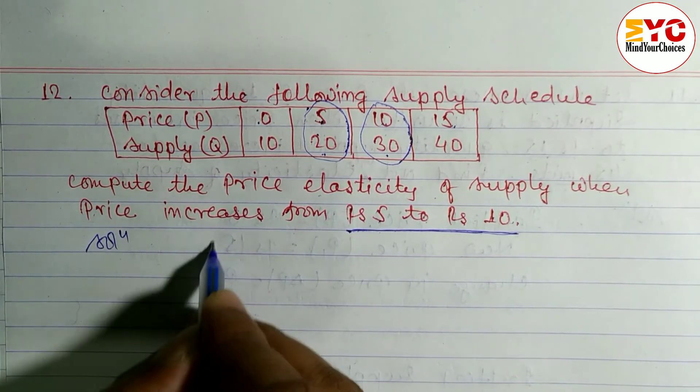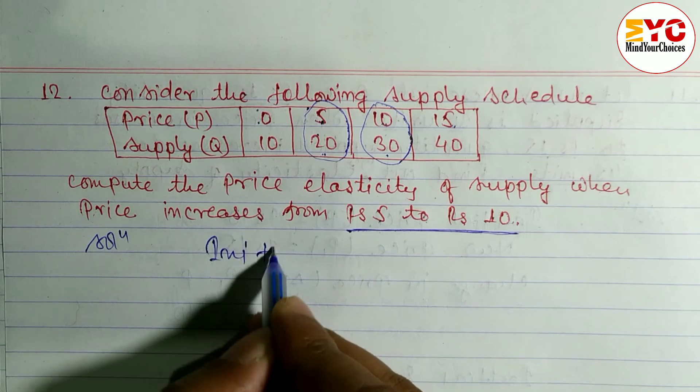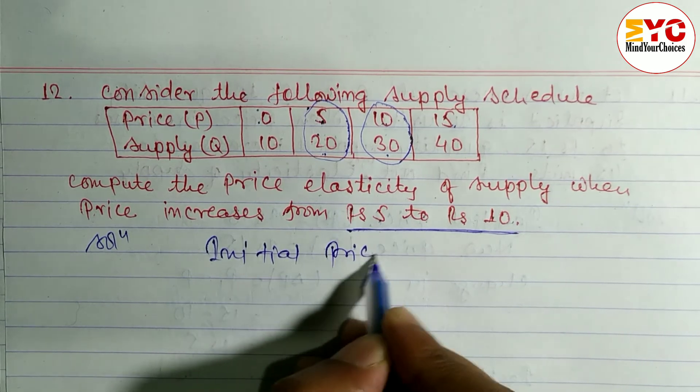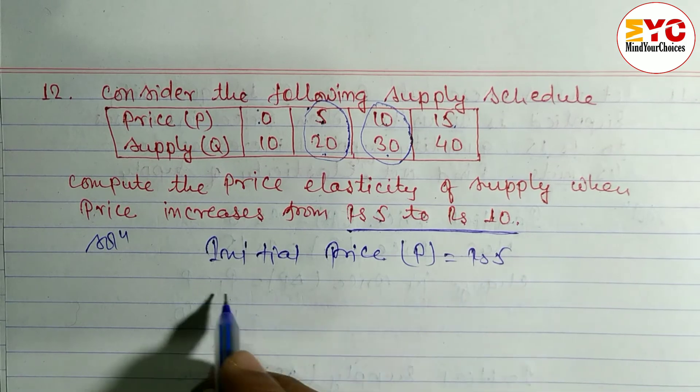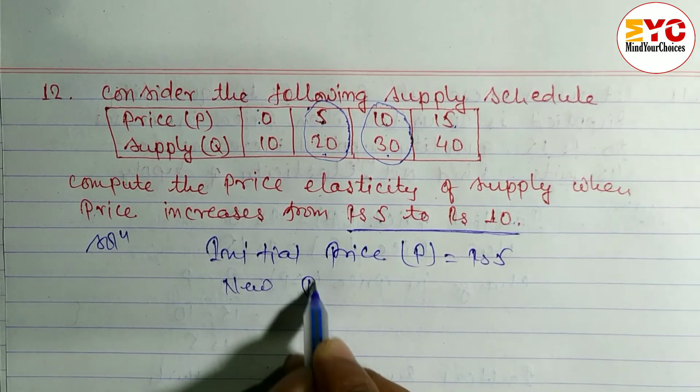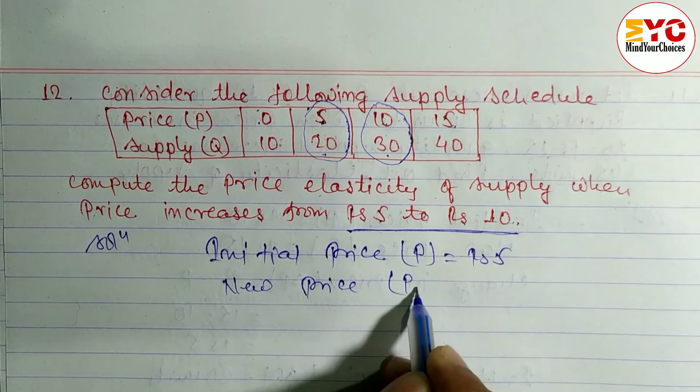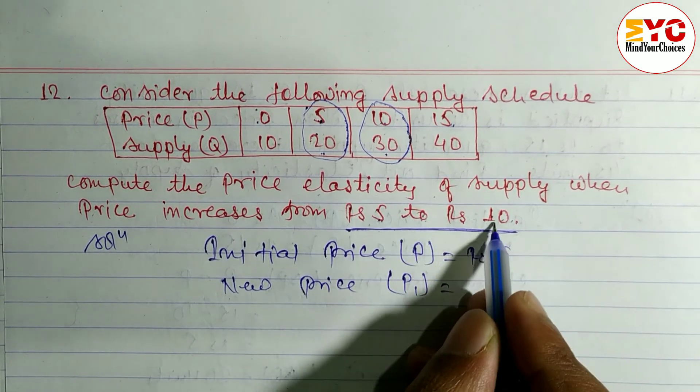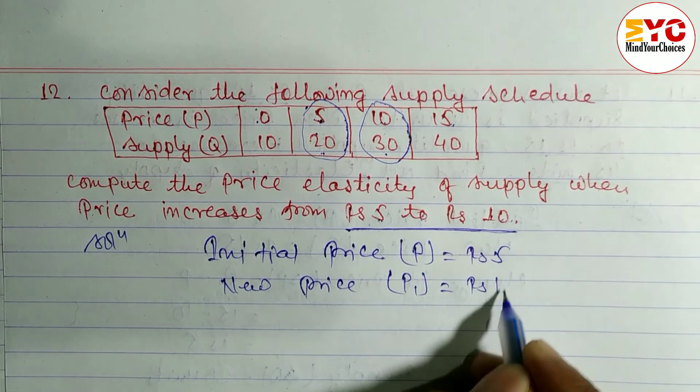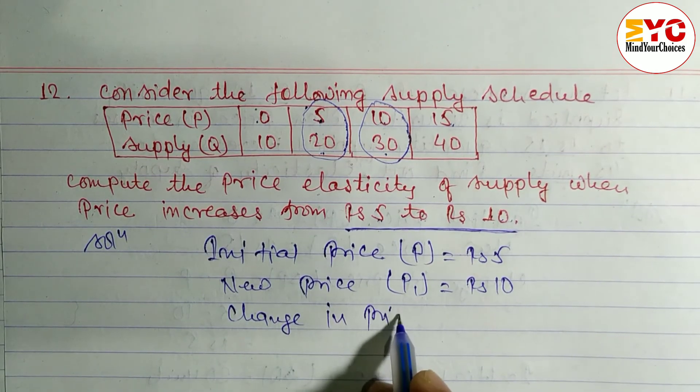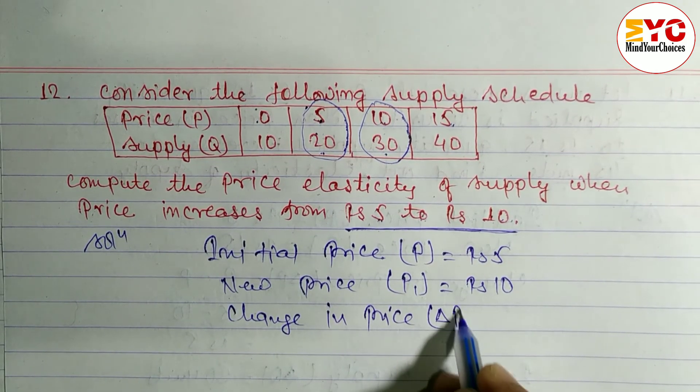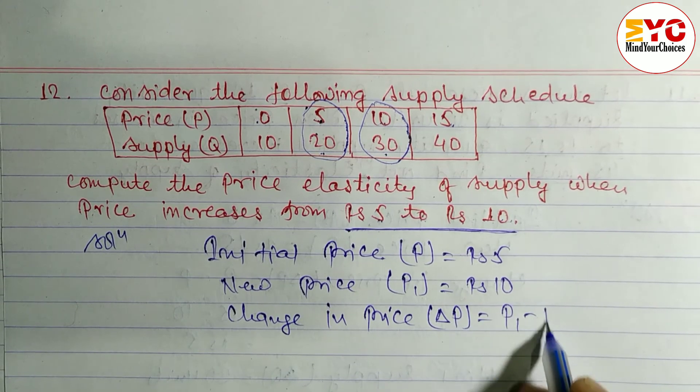Initial price, which we can denote by P, is equal to Rs 5. New price P₁ is equal to Rs 10. Now we have to find out change in price, which is denoted by ΔP, and the formula is P₁ - P. Here 10 - 5 is equal to Rs 5.